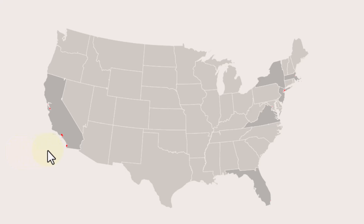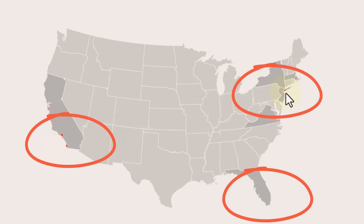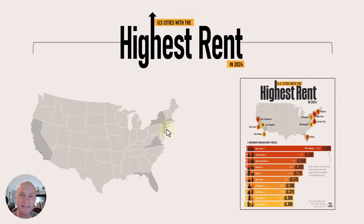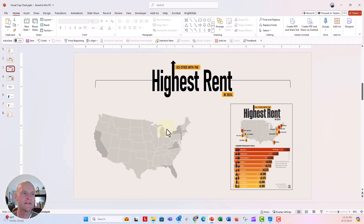It might be kind of difficult to see here, but you can kind of see the little red dots where the cities are. We are adding this map to the slide just for visual reference so that I can put those custom pins pretty much where those cities are. It doesn't need to be exact for the purposes of this infographic. So the map is on top of here, and we're going to add some shapes and put those right on top of the map.